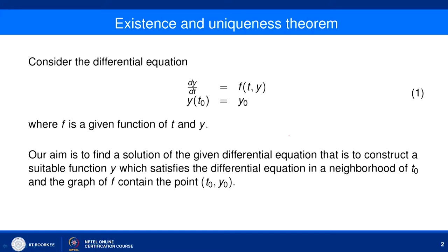Our aim is to find a solution of the given differential equation — that is, to construct a suitable function y which satisfies dy/dt = f(t,y) in a neighbourhood of the point t₀, and whose graph contains the point (t₀, y₀). Since the condition is given at an initial point, we call this an initial value problem.